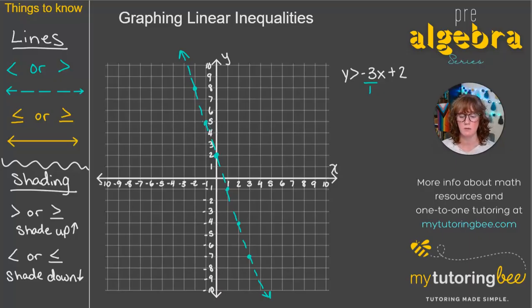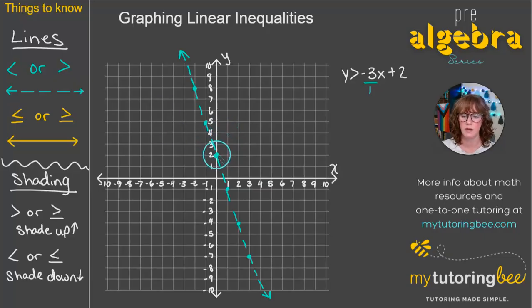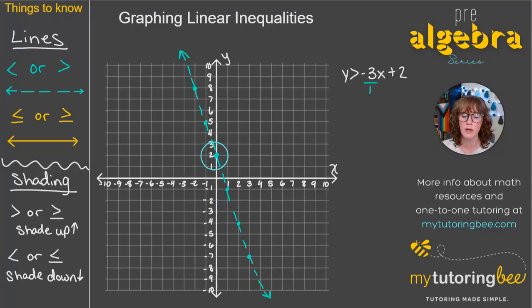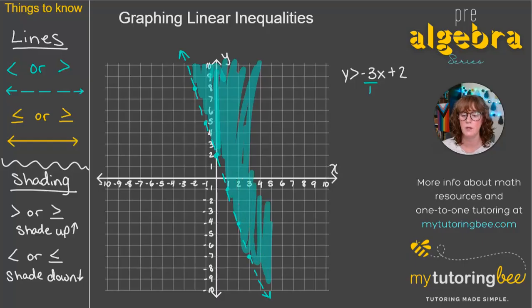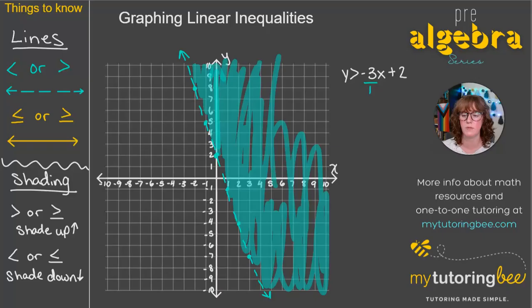Let's talk about shading. We have y is greater than all the rest of this. We're thinking: which y values are greater than this point at 2? All values above are greater — y is greater than the rest of this — so we are going to be shading up. Now that we know which side of the line, we can go ahead and shade all of that region.